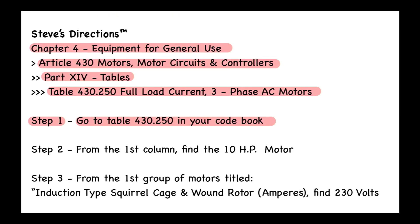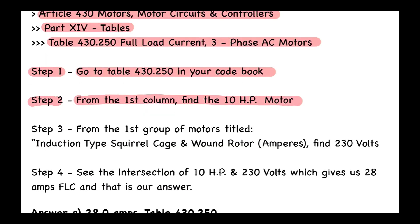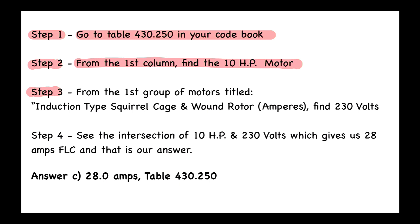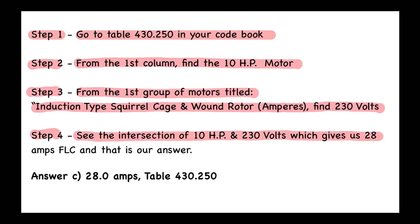Let's go back to the textbook and review how we solved this. Step two: from the first column, find the 10 horsepower motor. Step three: from the first group titled 'induction type squirrel cage and wound rotor amperes,' find 230 volts. Step four: the intersection of 10 horsepower and 230 volts gives us 28 amps FLC. The answer is C — 28 amps — and the code reference is Table 430.250.